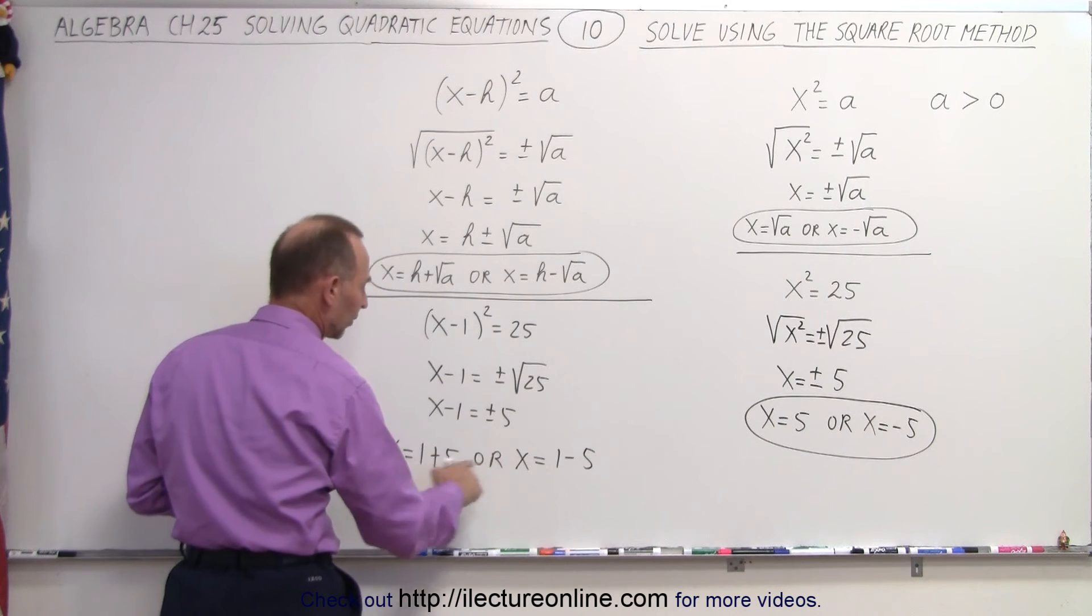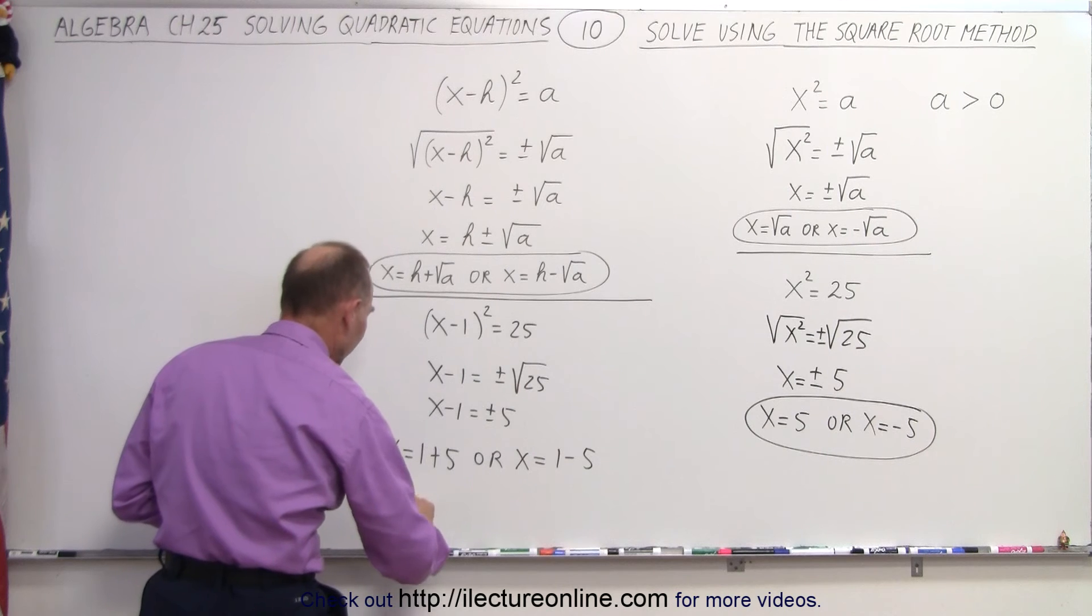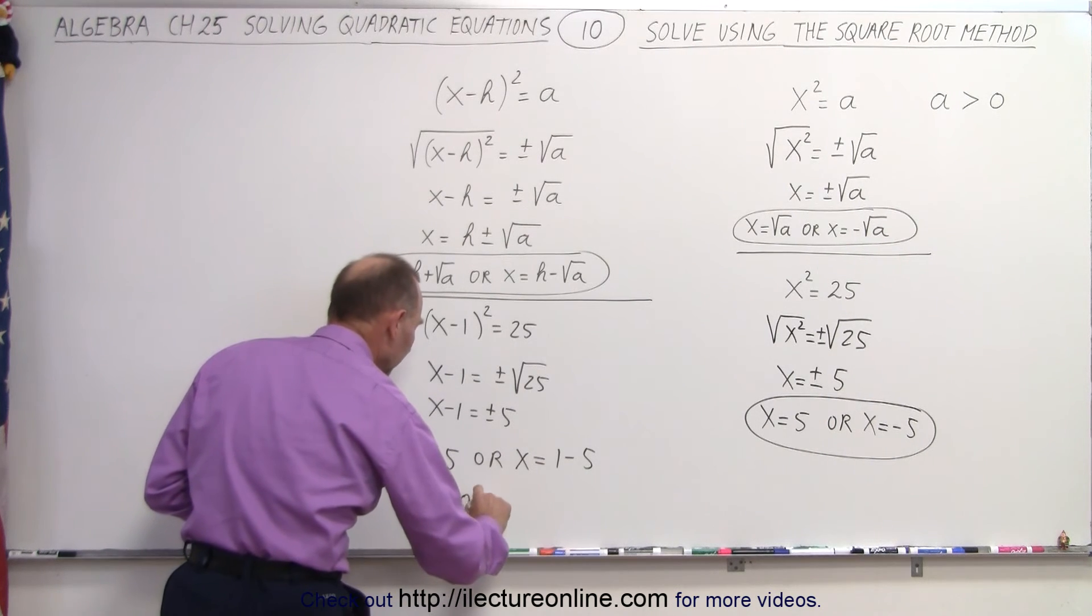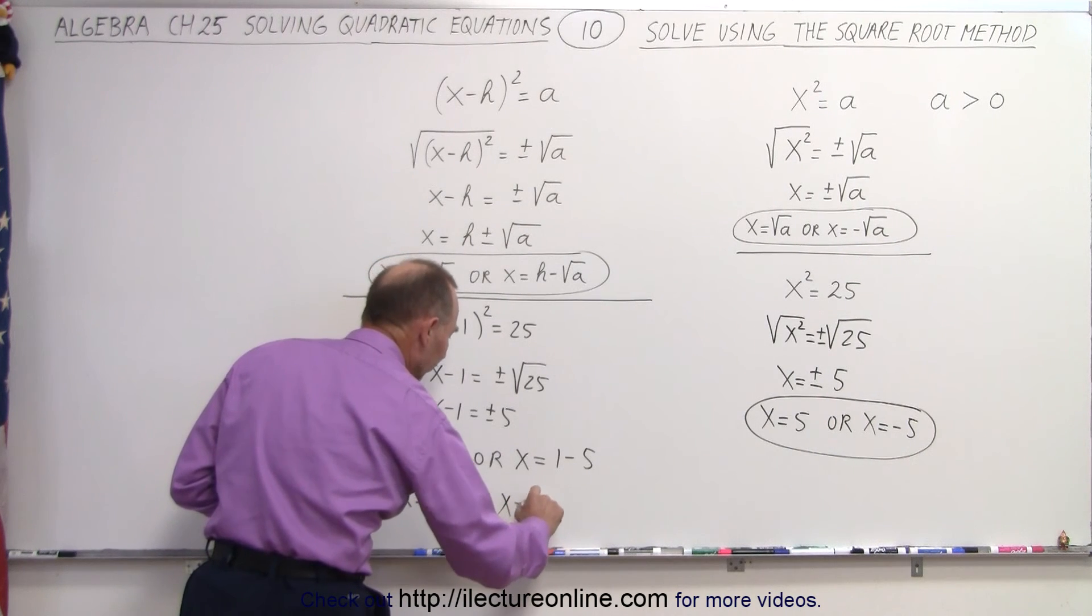I move the negative 1 to the right side. It becomes a plus 1. And I either take the plus or minus 5. That means that x equals 6 or x equals negative 4.